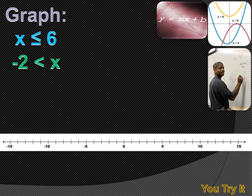One way is a circle that's filled in, and the other is a circle that's empty in the middle. Since this includes the 6 — X is less than or equal to 6 — we paint in that circle over the 6, indicating 6 is included in our solution set. Then we draw an arrow to the left, pointing towards the smaller numbers, because X is any number smaller than or equal to 6.